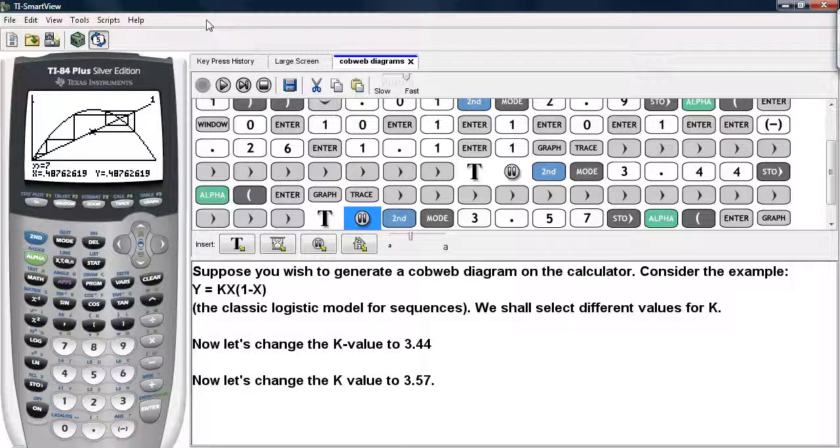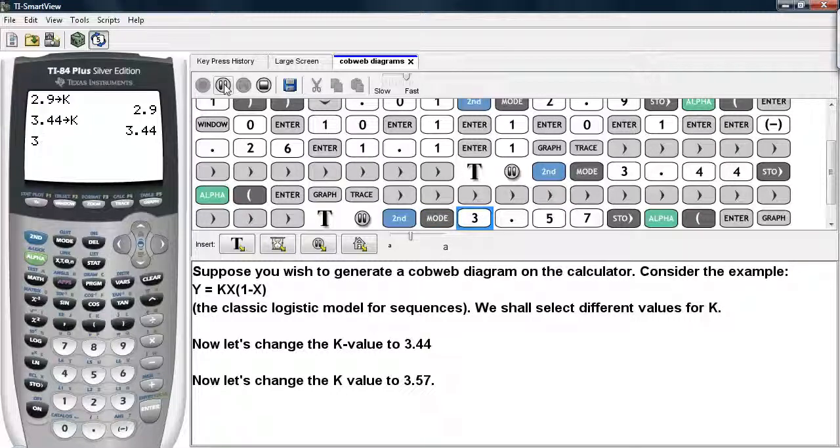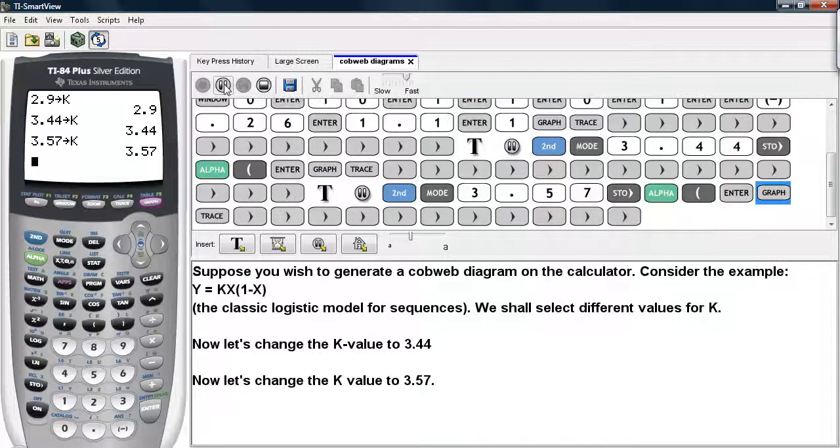Now let's change the value to 3.57 for our last example. So we go back to the home screen, type in 3.57 and store that as k. And we'll go back to the graph.